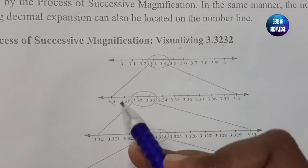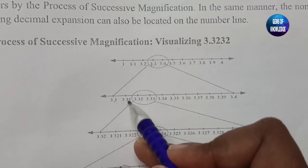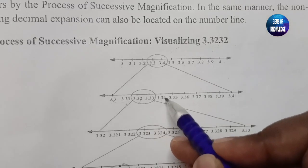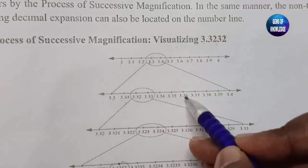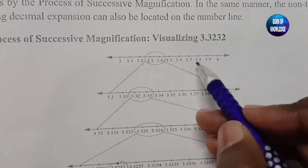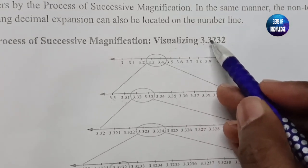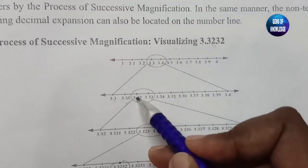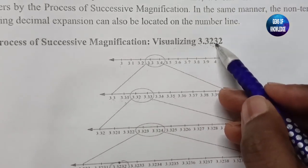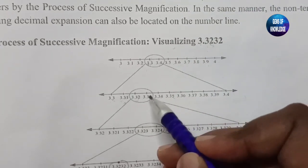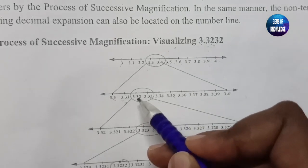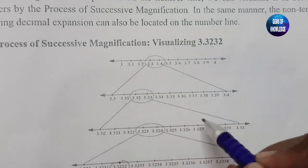After enlarging, we can see numbers like 3.31, 3.32, 3.33, 3.34, 3.35, 3.36, 3.37, 3.38, 3.39, and so on. We need 3.32, so we take 3.32 and the next number 3.33, and we will enlarge this section again.